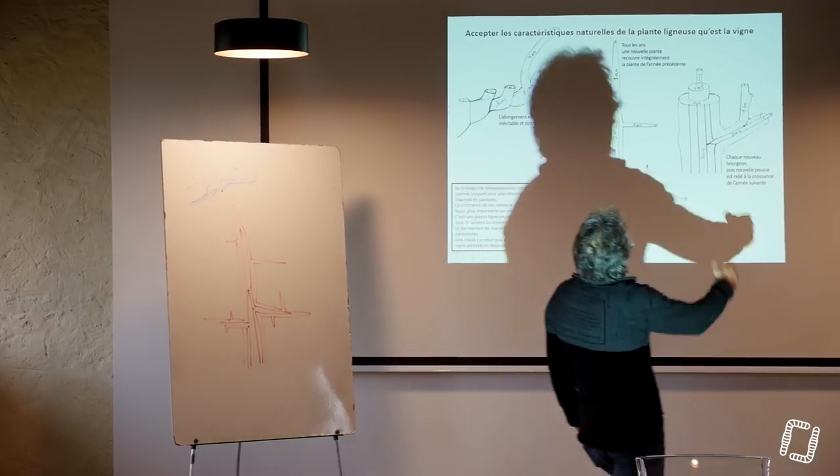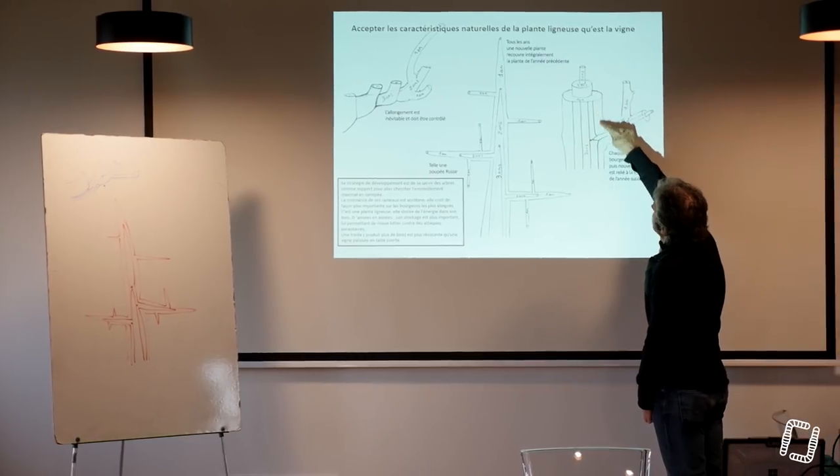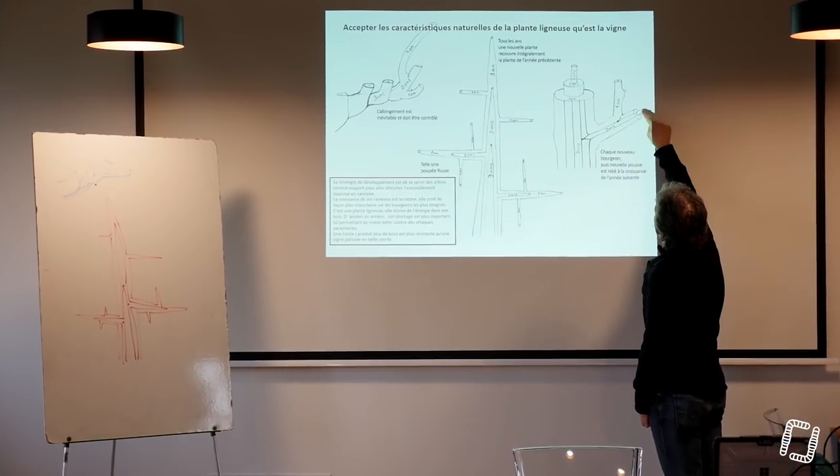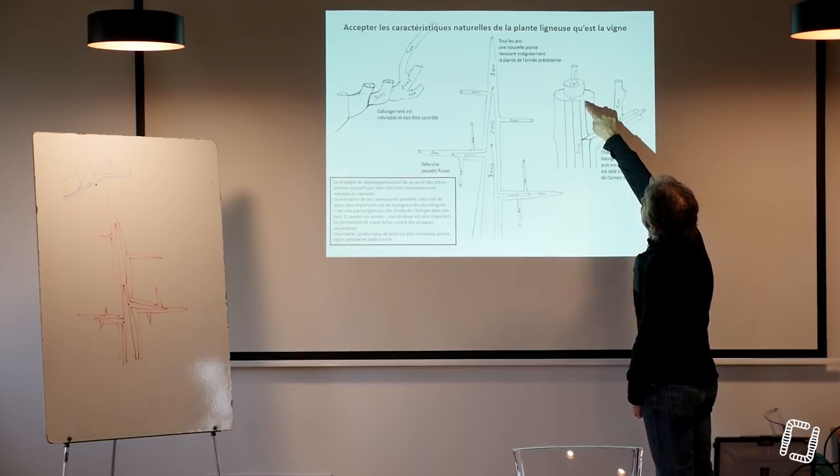Peut-être que ce schéma-là l'exprime aussi de manière un peu plus cohérente. Un an, un an, tout ça, ça a un an, c'est sur l'extérieur, ça a un an. Le 2 ans est à l'intérieur, a pris naissance sur le bois de 3 ans, mais est connecté au bois de 2 ans.